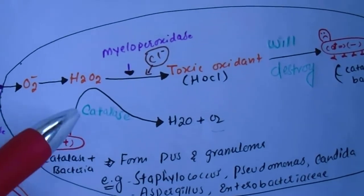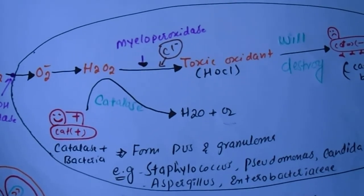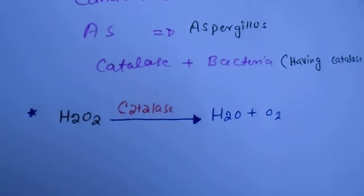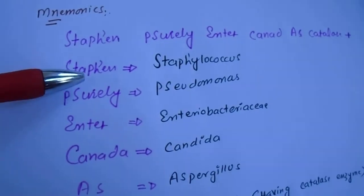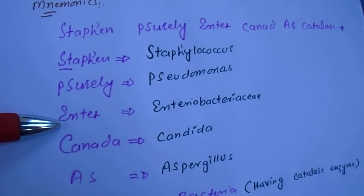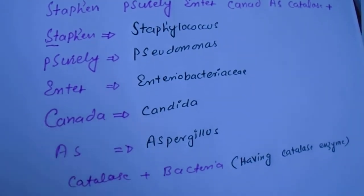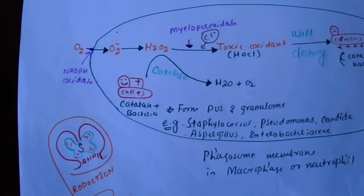Catalase-positive bacteria are the most commonly pus-producing bacteria. To remember: the mnemonic is 'Step In Surely Enter Canada' — Step In is Staphylococcus, Surely is Pseudomonas, Enter is Enterobacteria, Canada is Candida, and Aspergillus. These bacteria have the catalase enzyme, which is why they are called catalase-positive bacteria.